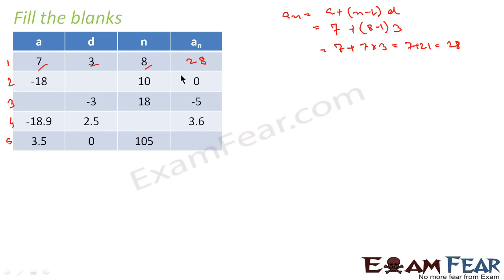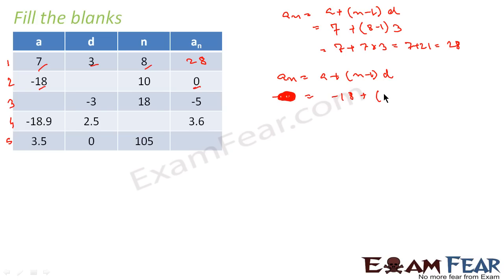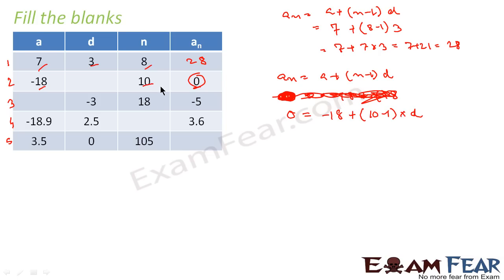For the second part, we use the same formula a_n = a + (n-1)d. Here a_n = 0, a = -18, n = 10. So: 0 = -18 + (10-1)d → 18 = 9d → d = 18/9 = 2. So d equals 2.